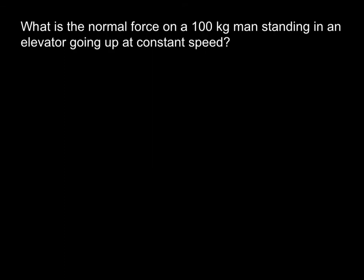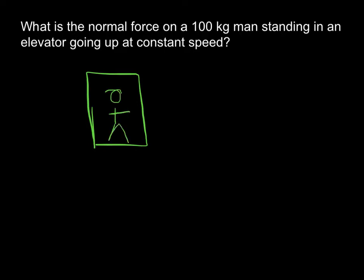Our first problem is fairly straightforward: we have a man in an elevator. Our first step is to draw a diagram. So we've got our man standing in an elevator — he's a stick figure — and we label the forces on him. We have the force of gravity pulling him down, and since he's standing on a surface, we have the normal force pushing him up.